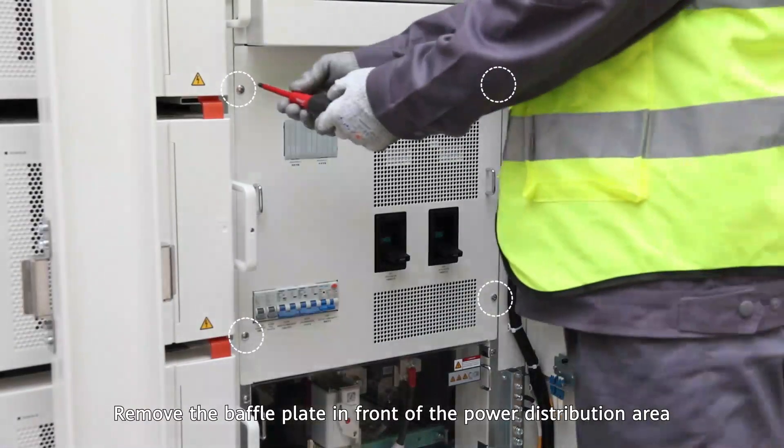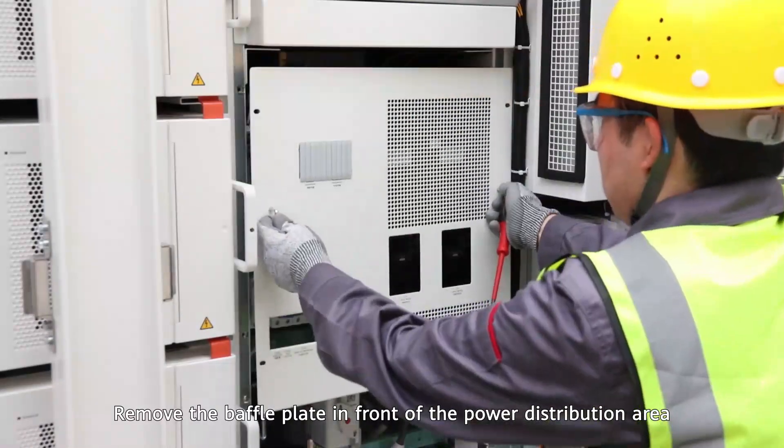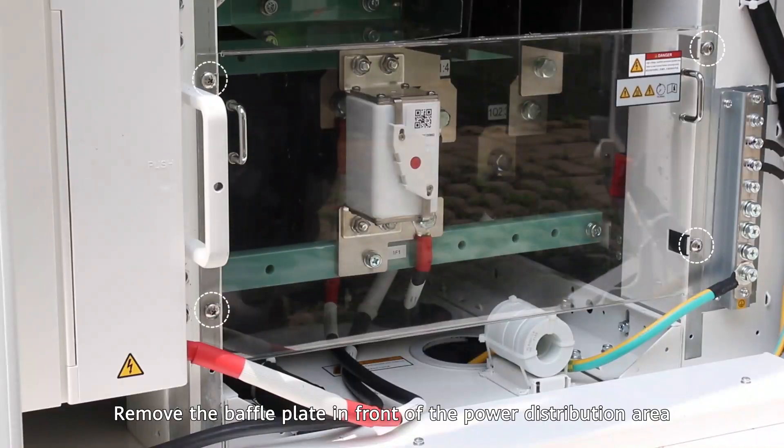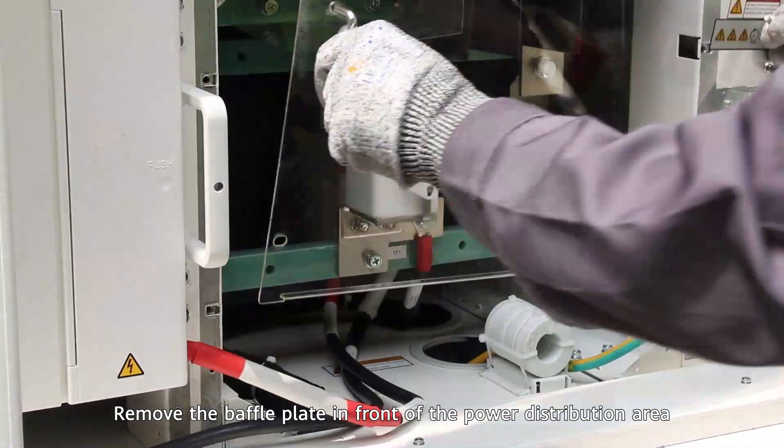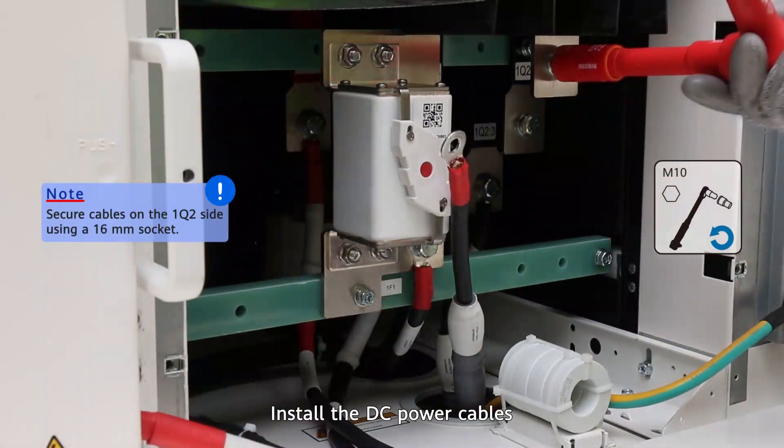Remove the baffle plate in front of the power distribution area. Install the DC power cables.